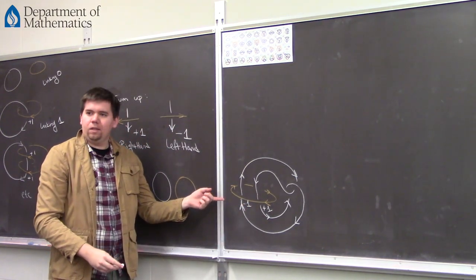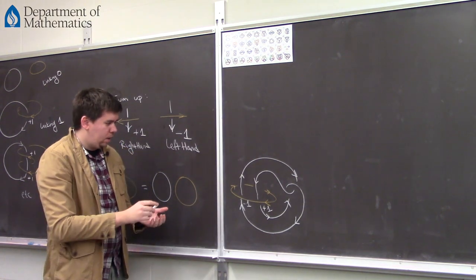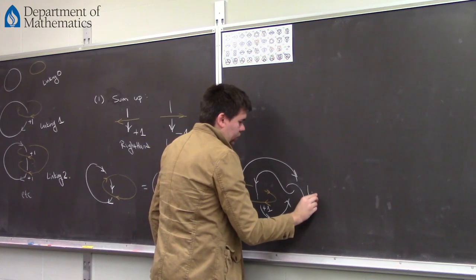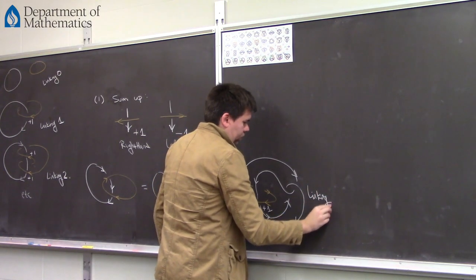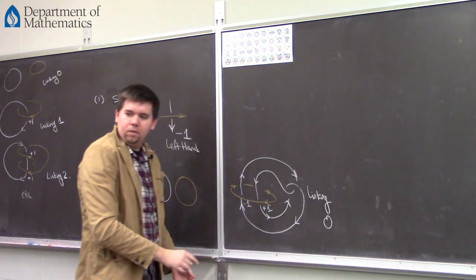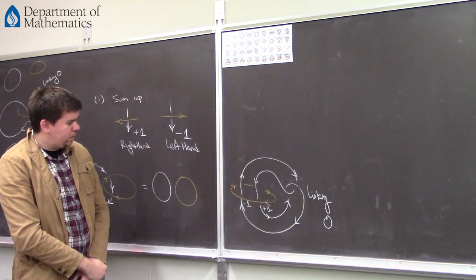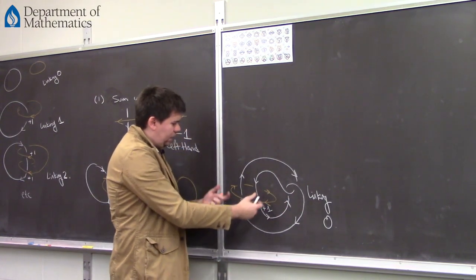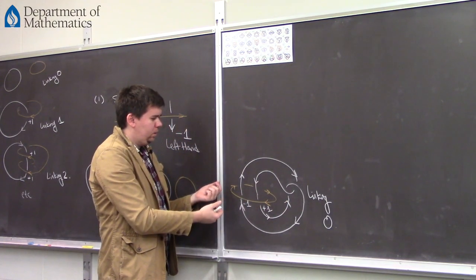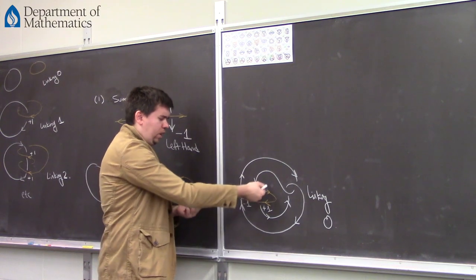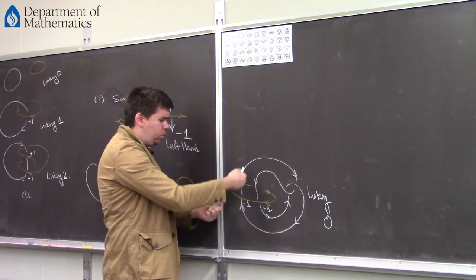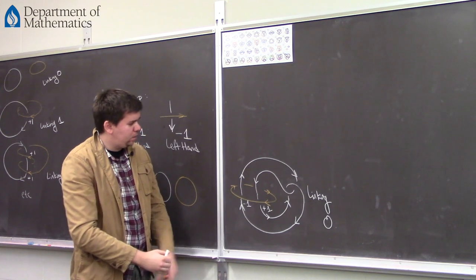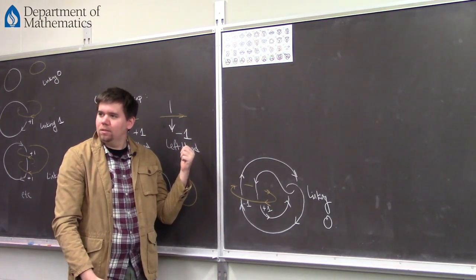So what's the overall linking of this? Zero. We'd say this has linking zero. Which is kind of funny, because you look at it and go, well, they're kind of linked together — it seems like the orange is trapped in the white. You can think about whether you can move around and free the orange; it seems like they're kind of trapped, and yet in some way this doesn't record that.